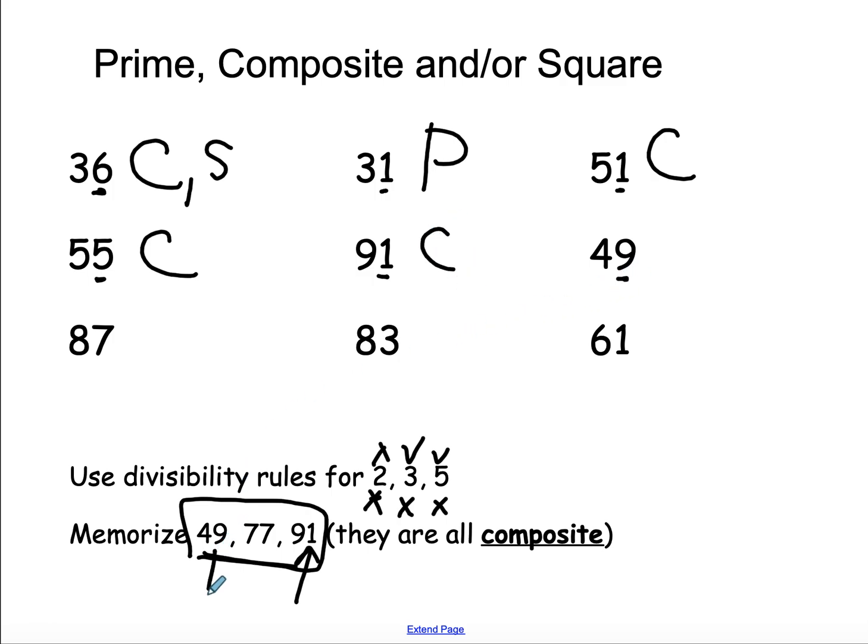49, on my memorized list. It is composite. Also, by the way, 7 times 7 is 49, so it is square.